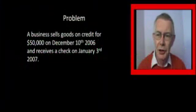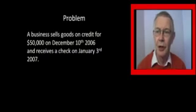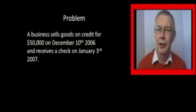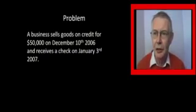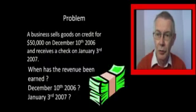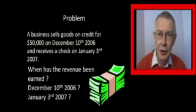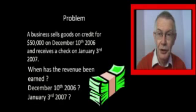A business sells goods on credit for $50,000 in December 2006 and receives a cheque in January 2007. When has the revenue been earned — in 2006 or in 2007?